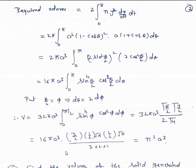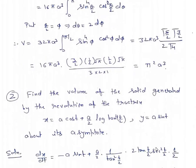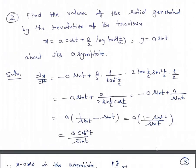Apply the gamma function formula: 32πa³ · Γ(5/2)·Γ(3/2) / (2·Γ(4)). Now Γ(5/2) = (3/2)(1/2)√π, Γ(3/2) = (1/2)√π, and Γ(4) = 3·2·1 = 6. Simplifying, we get volume = π²a³. Let's take the second example: find the volume of the solid generated by the revolution of the tractrix x = a cos t + (a/2)log(tan²(t/2)), y = a sin t about its asymptote.